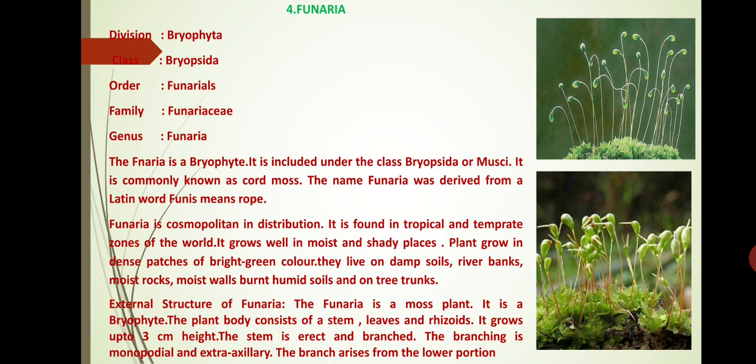It grows well in moist, shady places. Plants grow in dense patches of bright green colour. They live on the damp soil, river banks, moist rocks, moist walls, burnt humid soils and on tree trunks. Then we discuss about the external structure of Funaria.